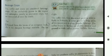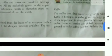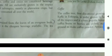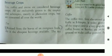Beverage crops — that is tea, coffee and cocoa. Three main beverage crops are there. All are exclusively grown in the tropics and subtropics, mostly as plantation crops, but are consumed all over the world.